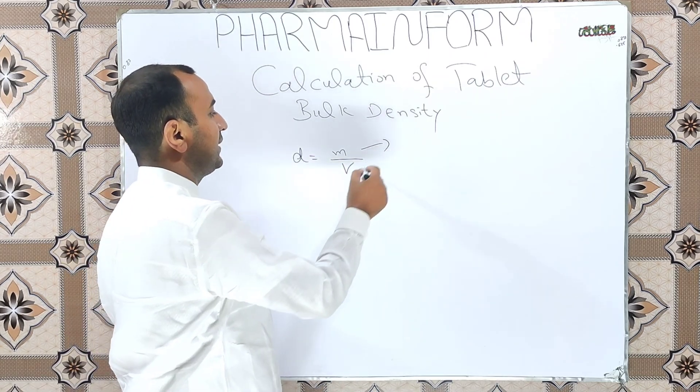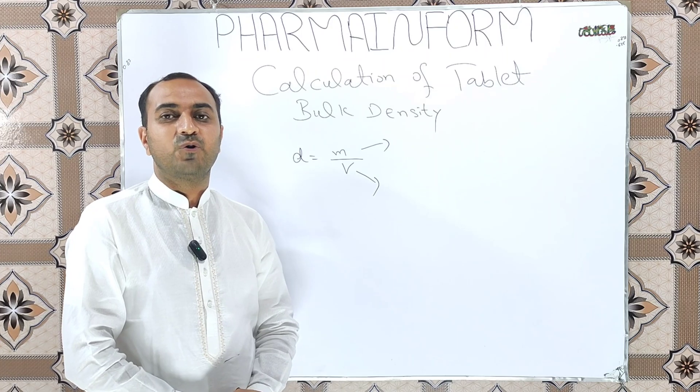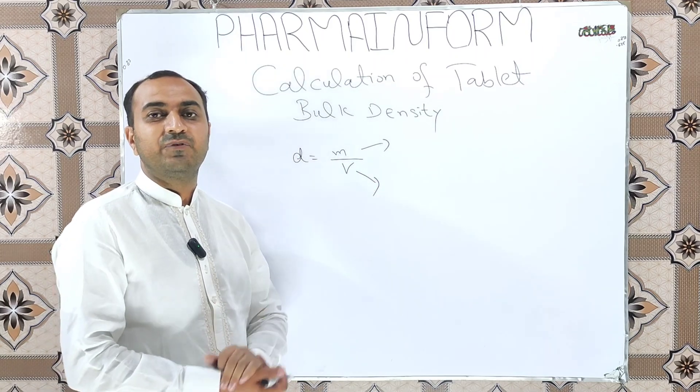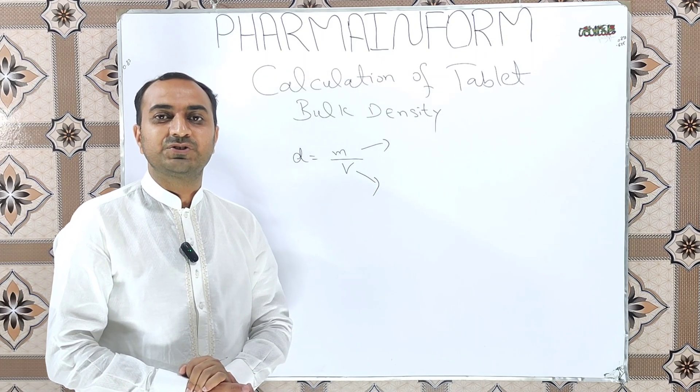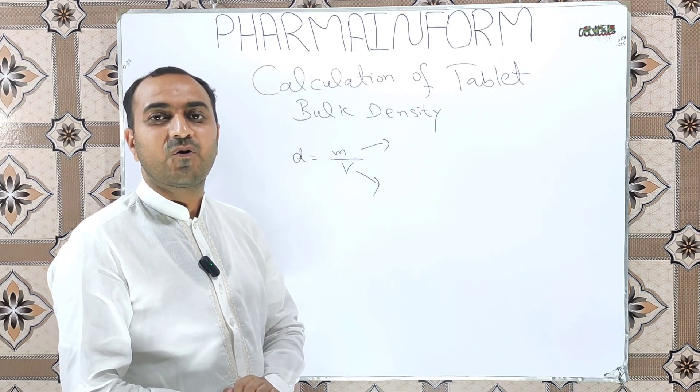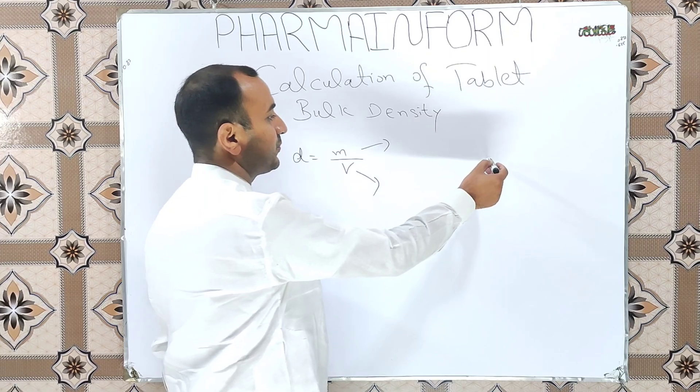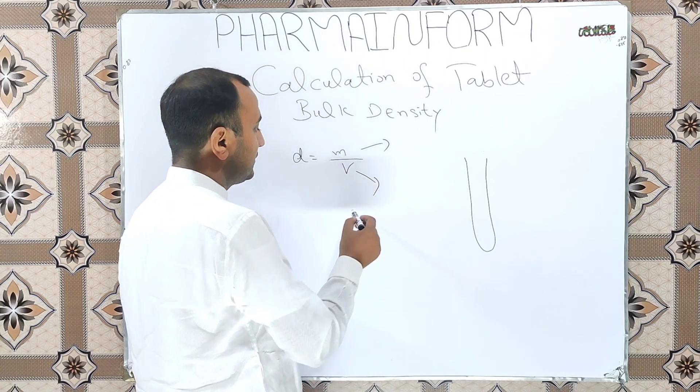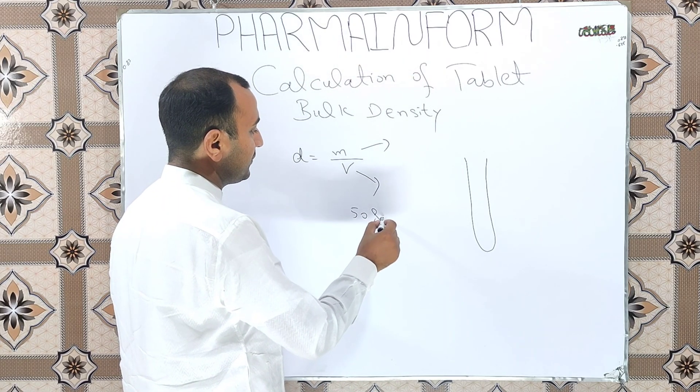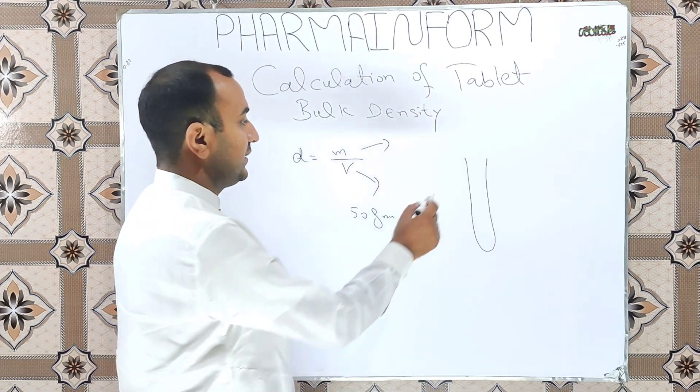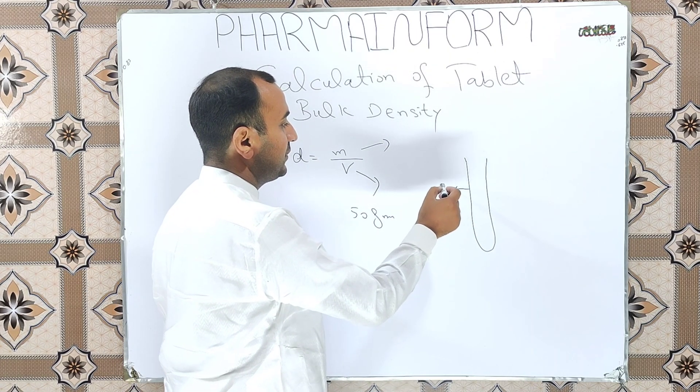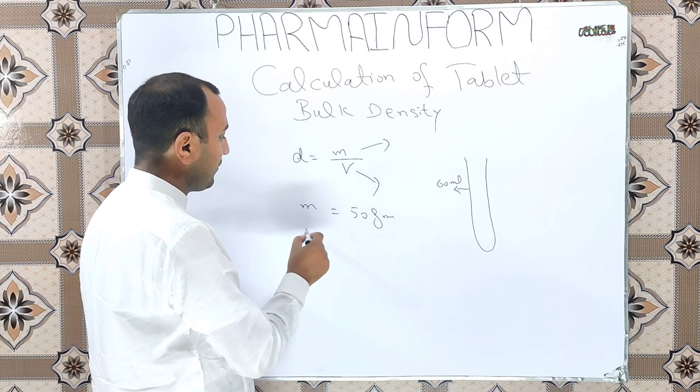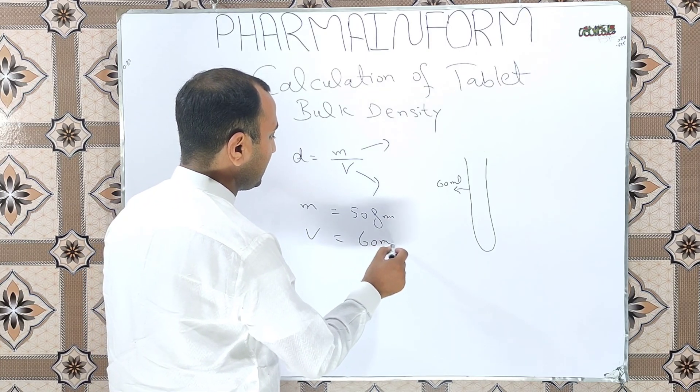For this, we will take any measuring cylinder and add a specified weight of the tablet into it and check how much volume is occupied by these tablets. Suppose we have a measuring cylinder and we add 50 grams of tablets and they occupy the volume of 60 ml. Mass equals 50 grams and volume equals 60 ml.